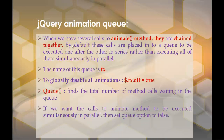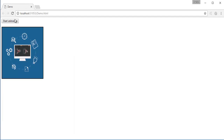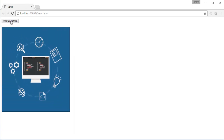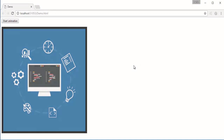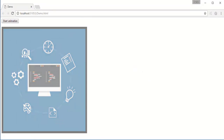When we have several calls to the animate method and these are chained together, by default these calls are placed into a queue to be executed one after the other in series, rather than executing all of them simultaneously in parallel. Each animate method executes one by one — not simultaneously or in parallel.